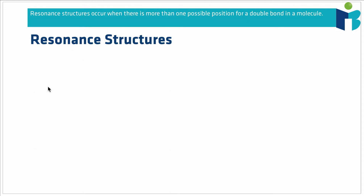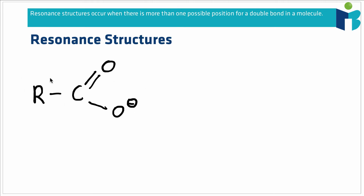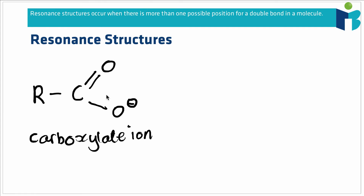So if we take something like a carboxylate group — a carboxylate ion is just a deprotonated carboxylic acid. This R group here could be any alkyl chain, but all we really care about is this carboxylate ion. From this molecular structure, we might expect that if we compared the length of this carbon-oxygen bond to this carbon-oxygen bond, the double bond we would expect to be both shorter and stronger than the single bond. That just goes back to our understanding of how covalent bonding works — we expect a multiple bond to be stronger and shorter than a single bond.